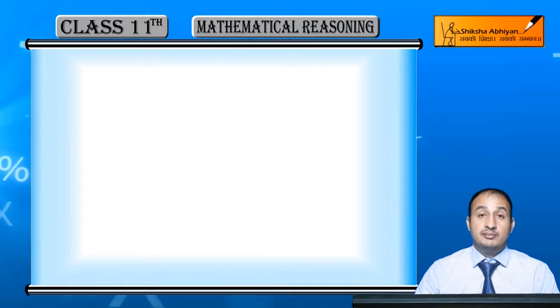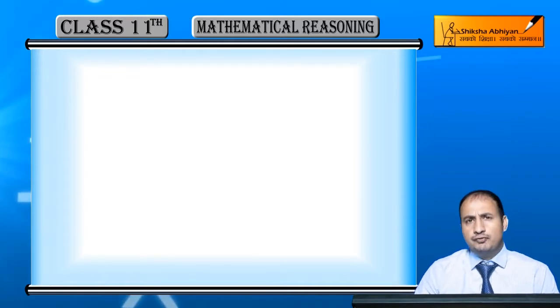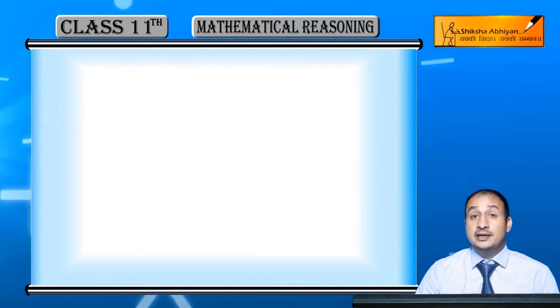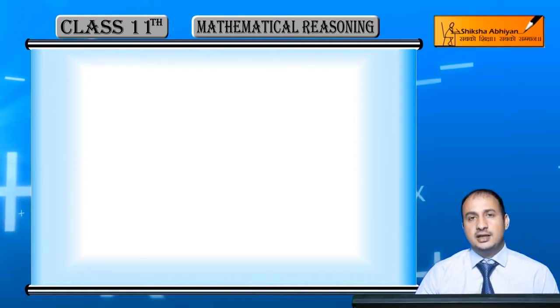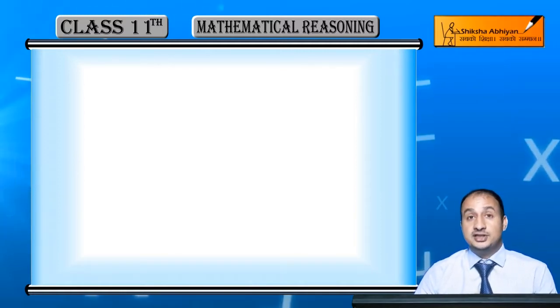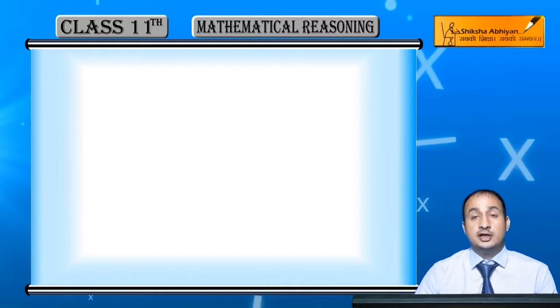Student, chapter ka naam hai mathematical reasoning. So first of all, humein pata hona chahiye ke reasoning aakhir kya ho. So reasoning generally, aap kehte hain ke kisi bhi cheez ko hum reasoning karenge, ke iska kya reason hai. What is the reason behind the objective statement?